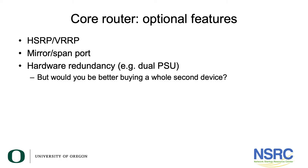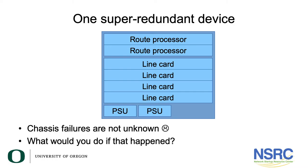What about hardware redundancy? Vendors heavily promote hardware redundancy such as dual power supplies, dual route processors, and dual line cards. But if you think about it, would you actually be better off buying a second device? You could buy a super-redundant device with dual route processors, redundant line cards, and dual power supplies — but what happens when the chassis fails? These failures are not unknown. Your super-redundant device becomes just a chunk of metal with no use to the campus at all.